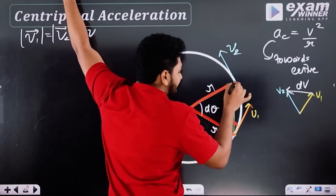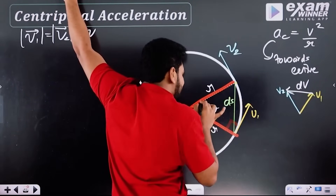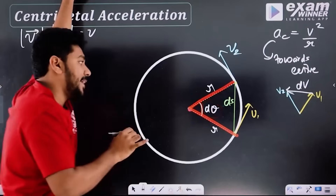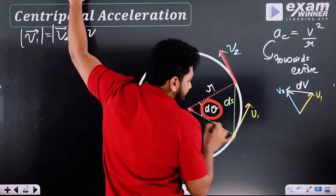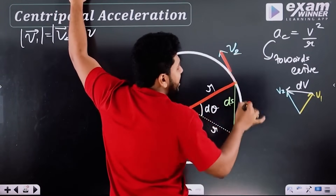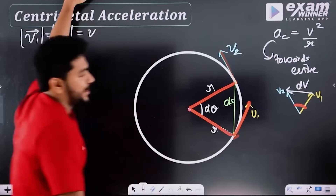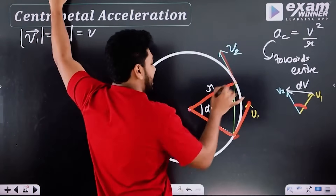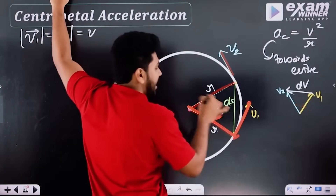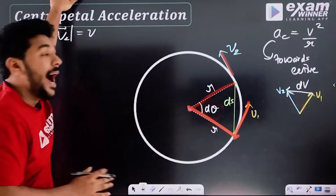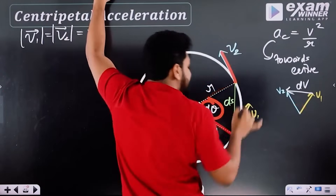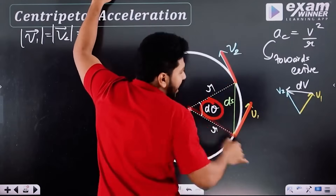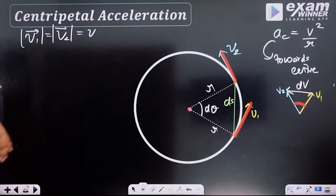Every angle is the angle. There's a curve and the angle between the two lines is dθ. The angle is dθ.